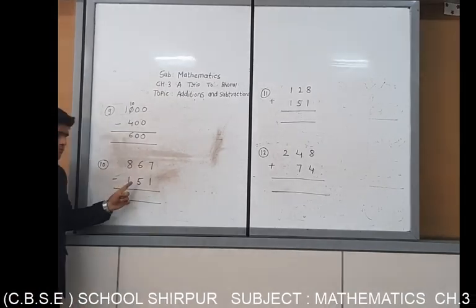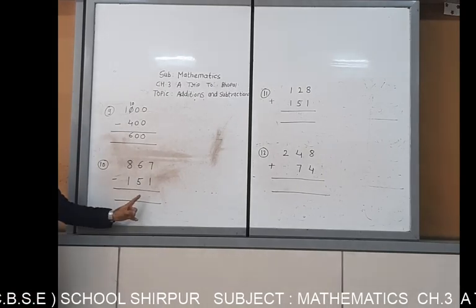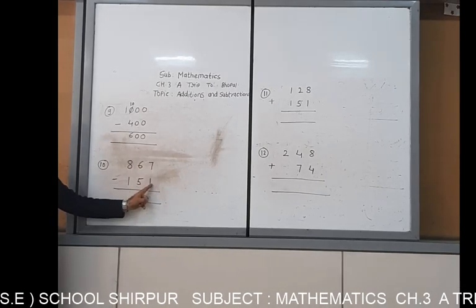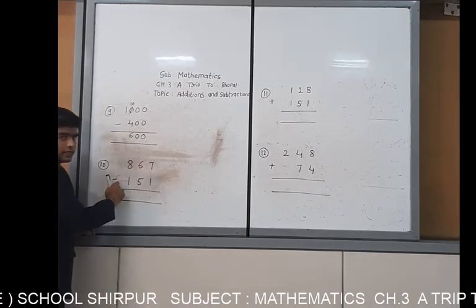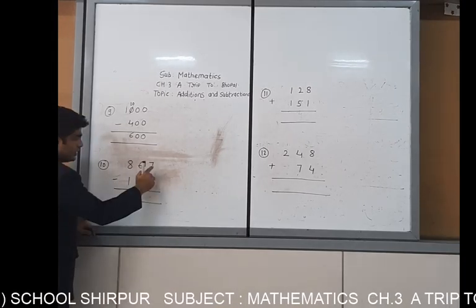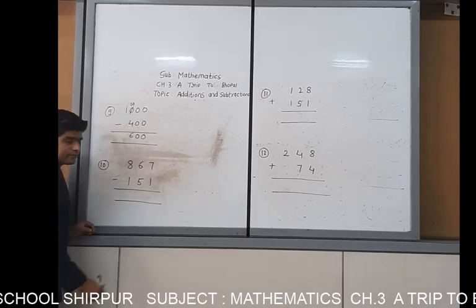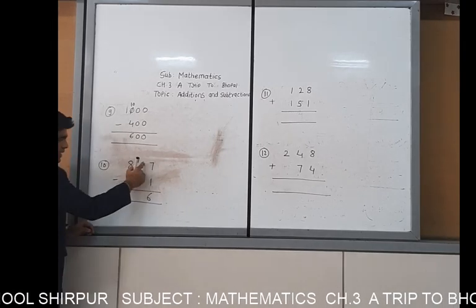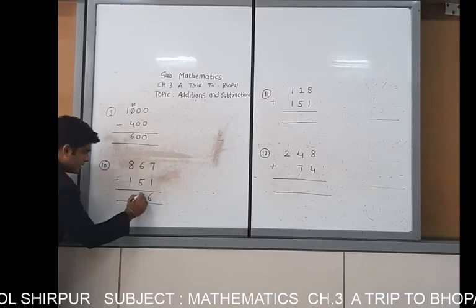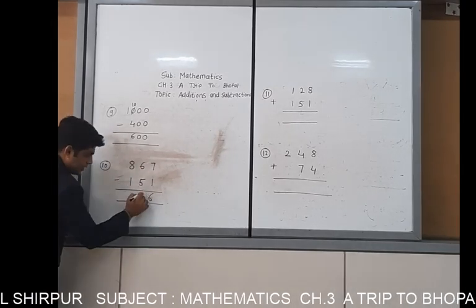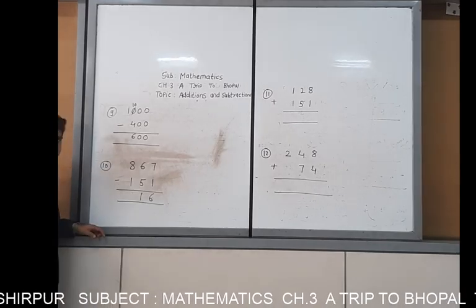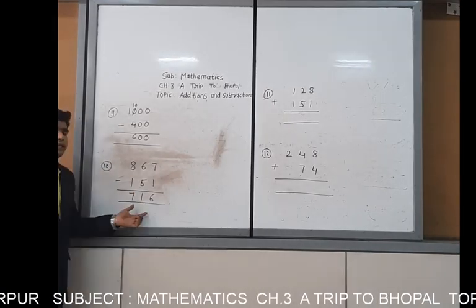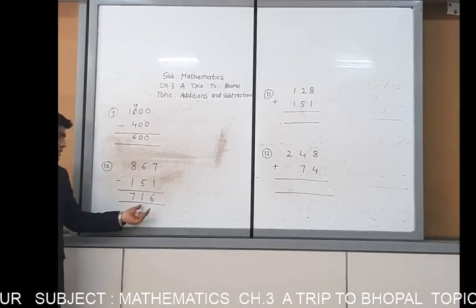Next example is also subtraction. 7 minus 1 is also 6. 6 minus 5 is 1. 8 minus 1 is 7. Your answer is 760.